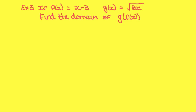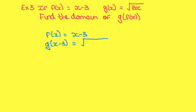Example 3. If f of x equals x minus 3 and g of x equals root 3x, find the domain of g of f of x. First do f of x, so f of x is equal to x minus 3. Then put x minus 3 into g of x, so you want to find g of x minus 3, which is the square root of 3 lots of x minus 3.